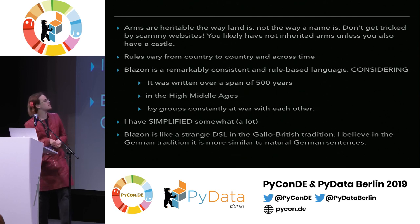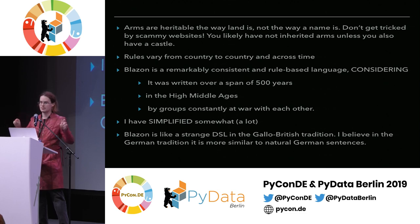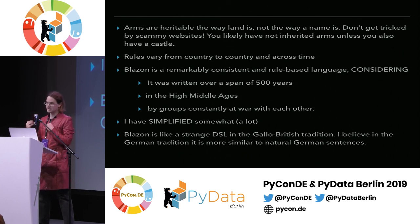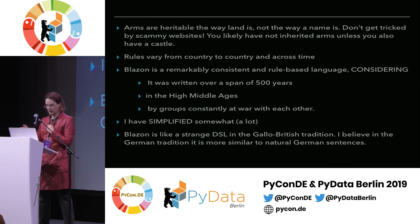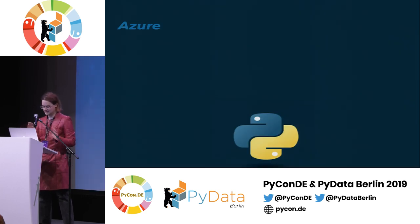Other things about coats of arms that are interesting: arms are inheritable kind of the way land is inheritable — usually the eldest son gets it, or sometimes depending on the country, it's split up. But it's not the same way a name is inheritable. So if you have a name — my name is Beecham — I don't necessarily inherit the arms of the Earl of Beecham of England. It's a more restricted lineage. So don't get fooled by a lot of websites. The other thing is, Blazon is a very consistent DSL, considering it was written over 500 years by warring factions in the Middle Ages. So I've had to simplify somewhat, but here we go.